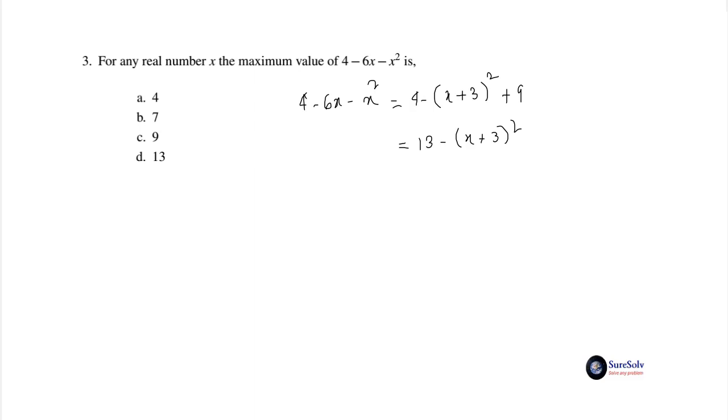Only when x = -3, the value of (x + 3)² will be 0. So 13 is the maximum value of 4 - 6x - x². Answer: option d) 13. If you know the method, the problem is very simple. Let's solve the fourth problem.